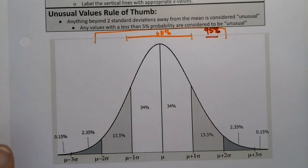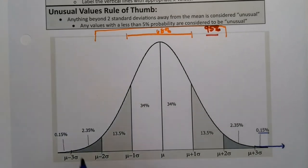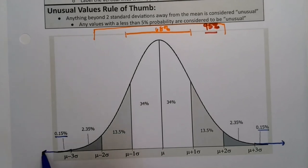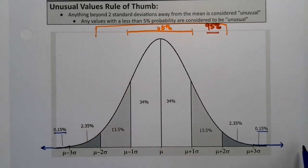Another thing to note is that the graph doesn't end where it seems like it ends, it actually keeps going. So this 0.15% is actually from three standard deviations and beyond. And also this 0.15% is actually from negative three standard deviations and beyond. It's this whole zone from here to infinity is 0.15%.